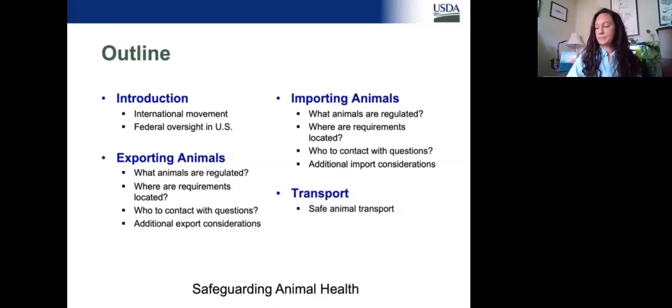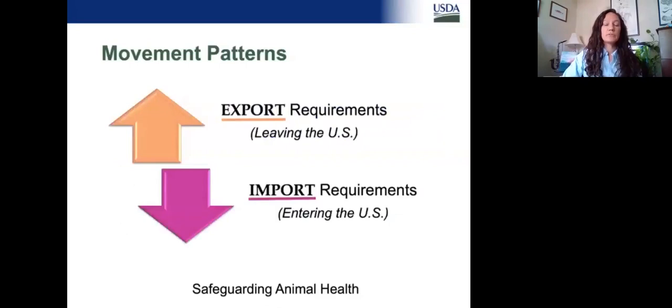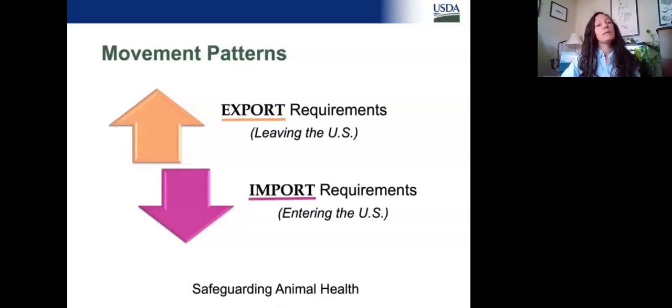To get started, the international movement of aquatic animals. In general, when I refer to export requirements, we're talking about live animals that are leaving the United States going to another destination country. When we're talking about imports, we're talking about animals entering the United States. When I say animals, that would include live fish, crustaceans, or mollusks, but also their germ plasm — so fertilized eggs, milt, smaller seeds, various life stages, the whole gamut.